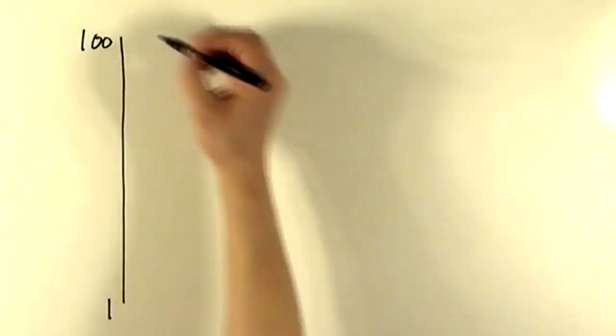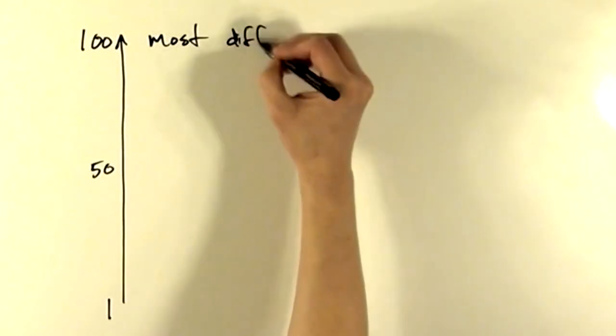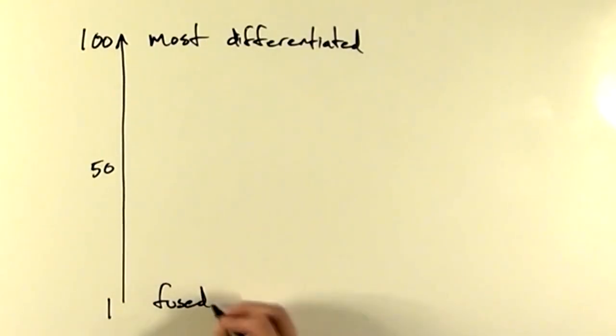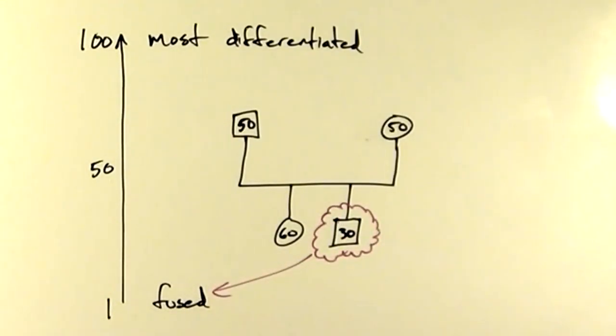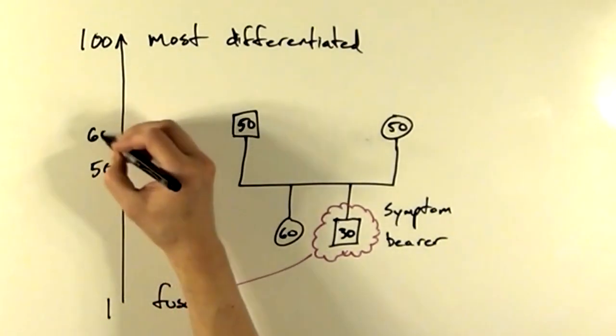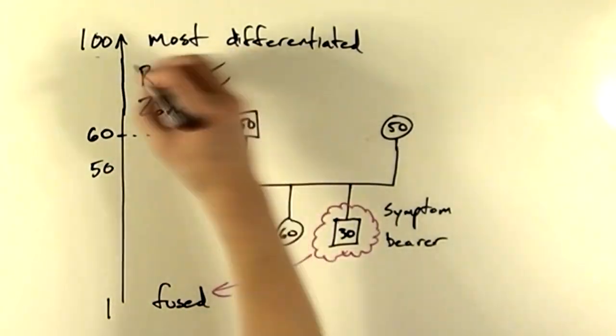Bowen rated people on a differentiation scale from 1 to 100, with 100 being completely differentiated and 1 being completely fused. In a family, the person with the lowest number is often the symptom bearer of the family fusion. Bowen believed that most people stay at the differentiation level they had when they left home, which is very rarely above 60.